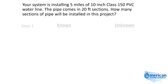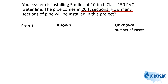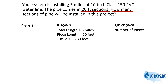Using our five-step approach, we're going to collect our information from the problem and write that down. We're trying to calculate the total number of pieces. We're told the total length is five miles, each pipe is 20 feet long, and one mile is 5,280 feet — that's something you should remember. That's step one.